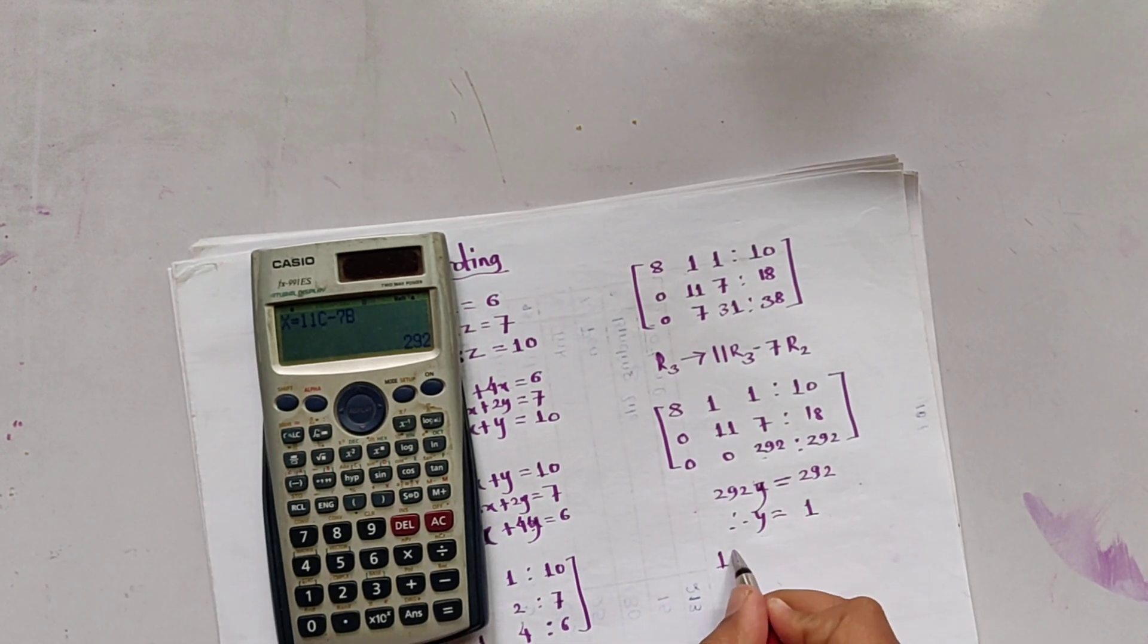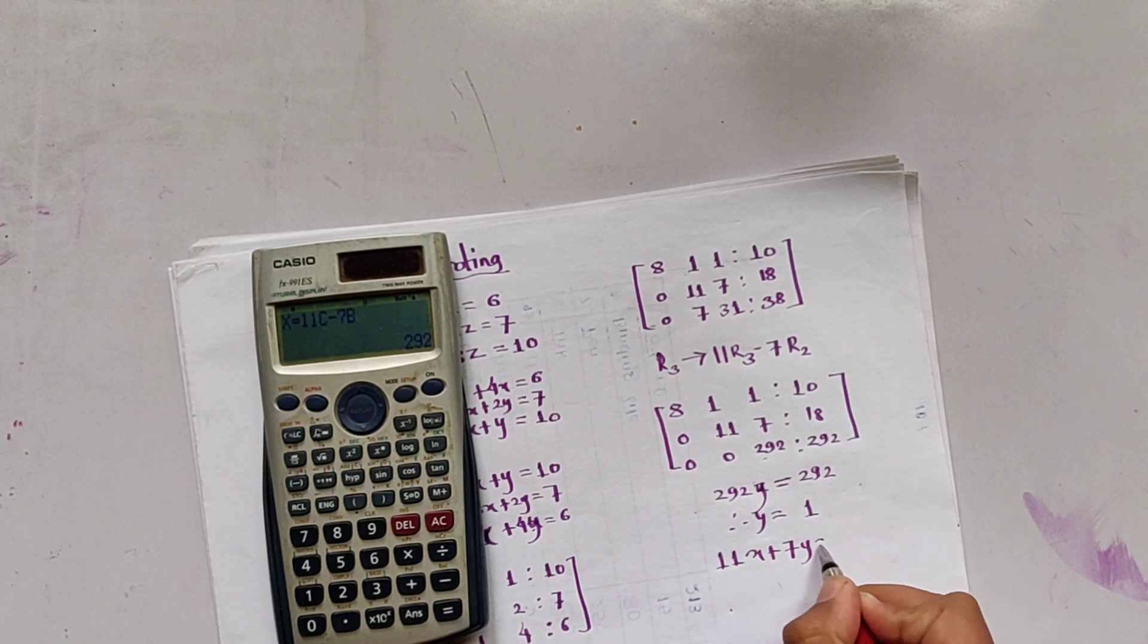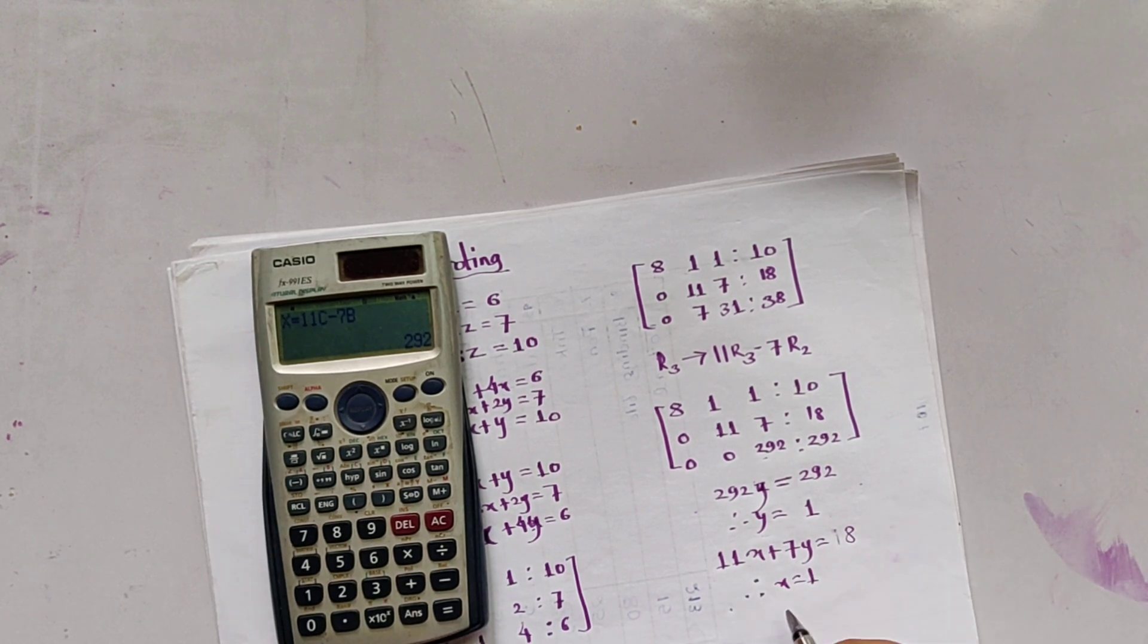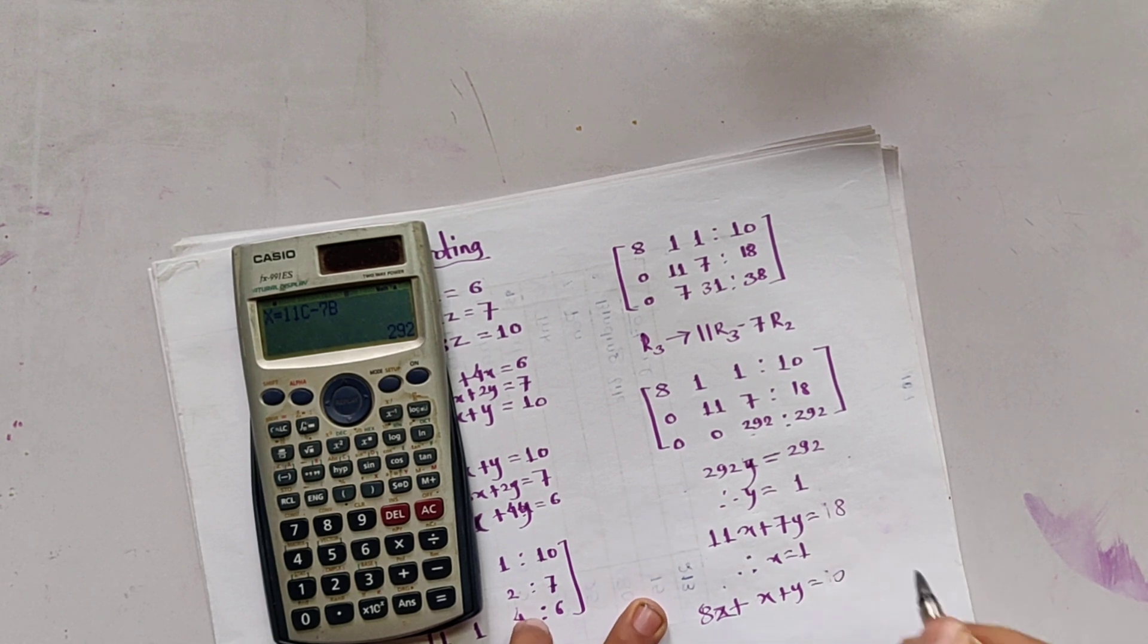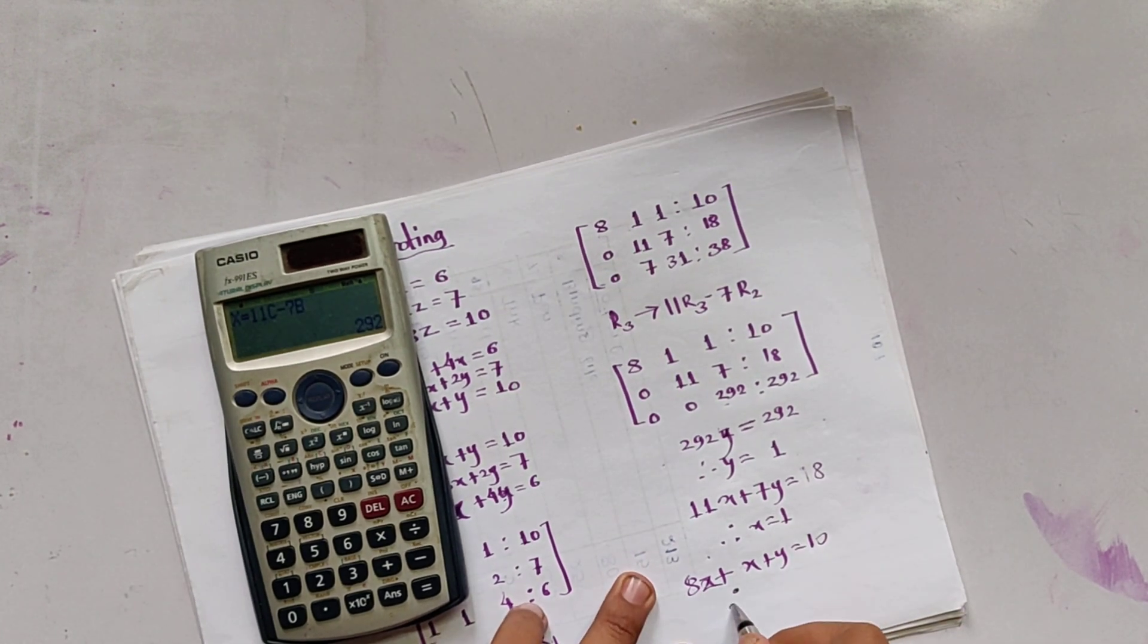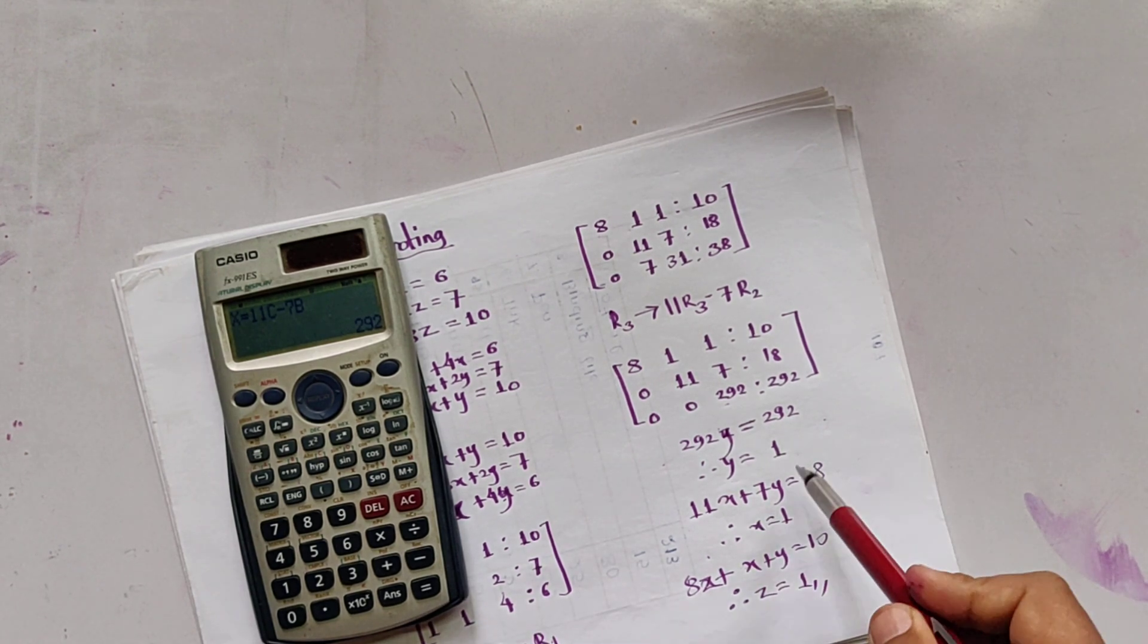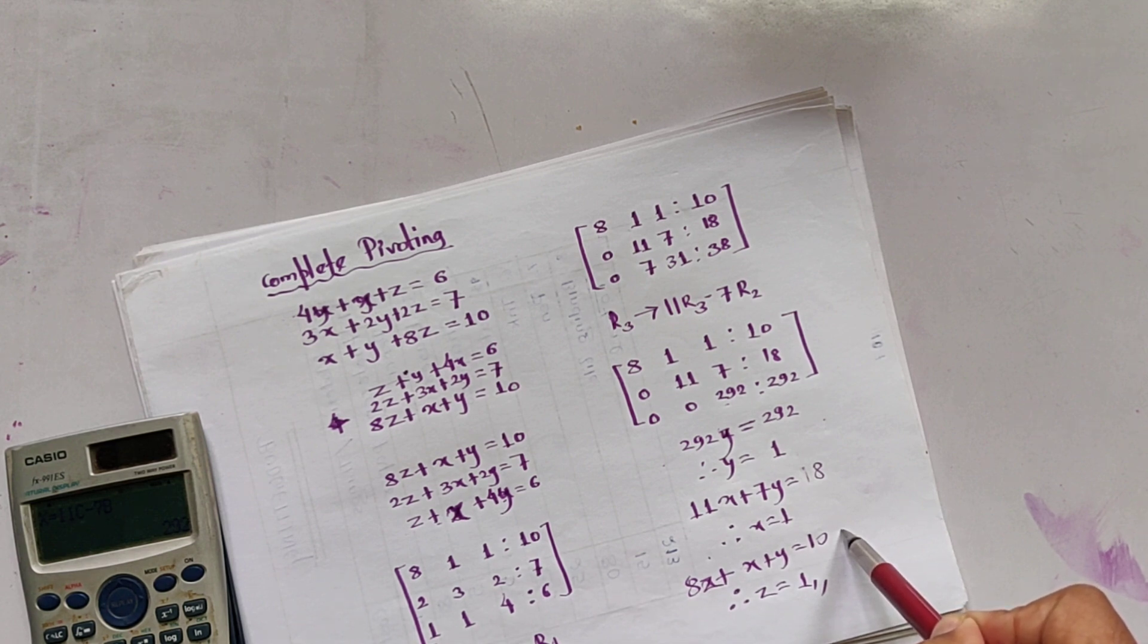Similarly, 11X plus 7Y equals 18. We get X is also 1. Similarly, 8Z plus X plus Y equals 10. And we get Z equals 1. So we have found the value of X equals 1, Y equals 1, and Z equals 1.